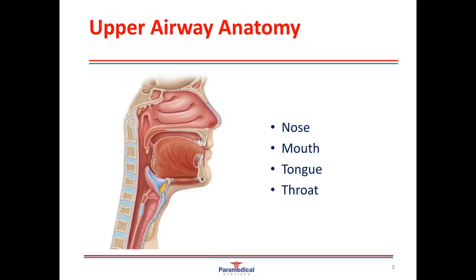The tongue is the most common cause of upper airway obstruction. There's an old wives' tale that someone can swallow their tongue, so people were advised to put a spoon or stick in their mouth — but looking at the anatomy, it is absolutely impossible to swallow the tongue, so we never place anything in the mouth of someone unconscious or having a seizure. However, when unconscious the tongue can relax and flop to the back of the throat, causing obstruction. We can tilt the head back and lift the chin to move the tongue and open the airway.